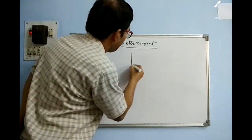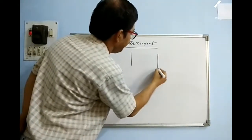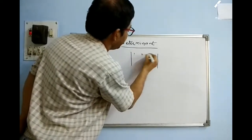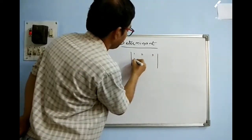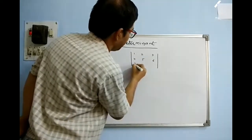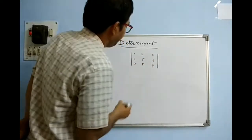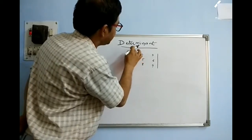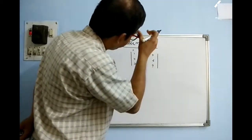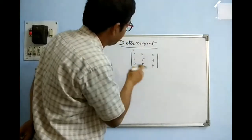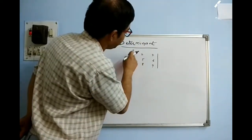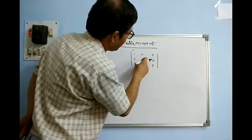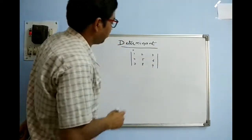Determinant — we will see how the operation of determinant is performed. Suppose the elements are arranged in a matrix. The sign of the first place is positive, and every neighboring element has the opposite sign to its neighbor: positive, negative, positive, negative, positive, negative, and so on.